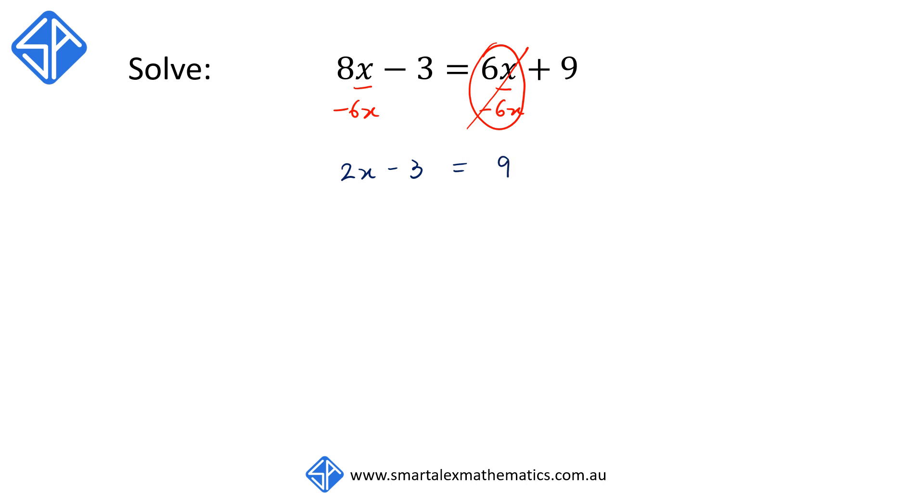We're now going to add 3 to both the left and the right hand side. This will eliminate the negative 3 from the left hand side so that we now have 2x is equal to 12. Next step we divide both sides by 2 and this gives us the answer of x is equal to 6.